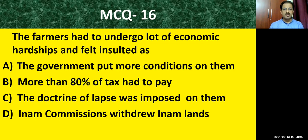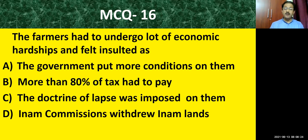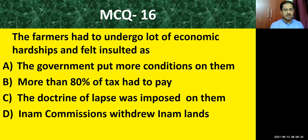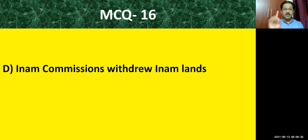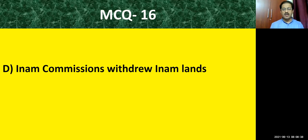MCQ question number sixteen: the farmers had to undergo a lot of economic hardships and felt insulted — they felt deprived. Options: the government put more conditions on them; more than 80% of tax had to be paid; the doctrine of lapse was imposed on them; in-arm commission withdrew in-arm lands. The correct answer is: in-arm commission withdrew in-arm lands.